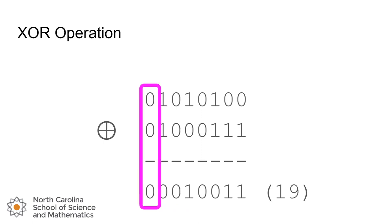And this operation results in a binary number that represents the decimal 19 or in binary 00010011.